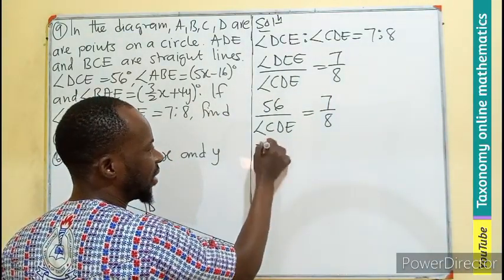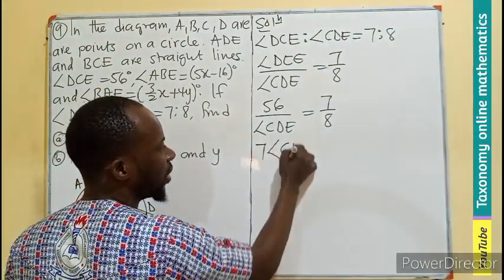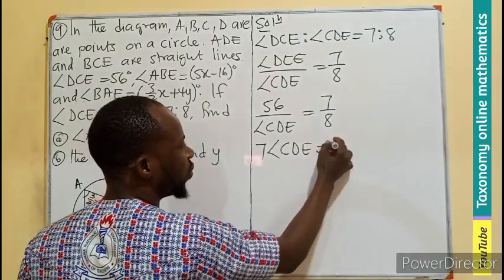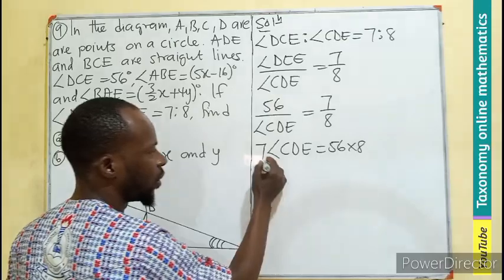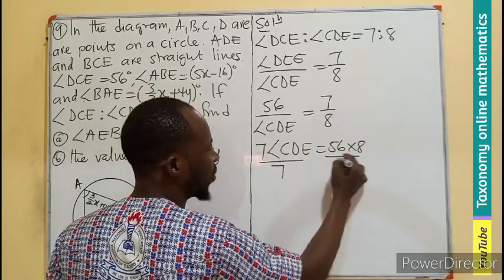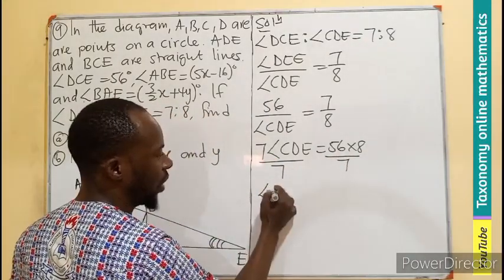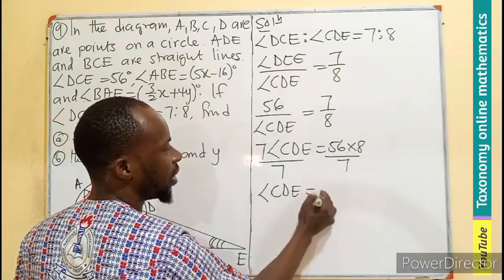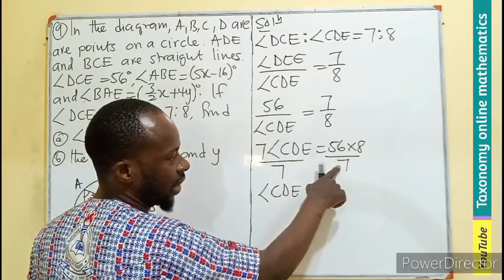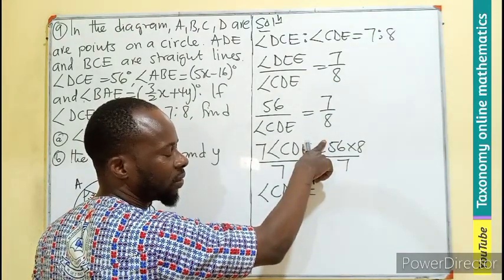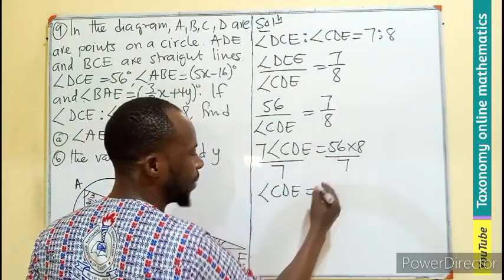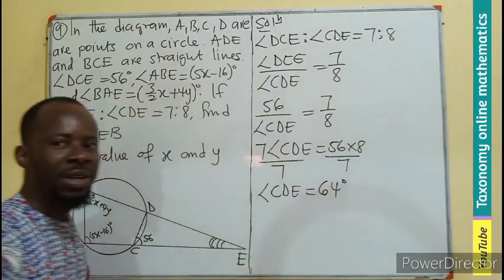So I'll be having 7 times angle CDE equals 56 times 8. We divide by the 7 in order to have the angle isolated. Angle CDE equals that. We know 7 is a factor of 56. It will be 8. So 8 times 8 will give us 64 degrees.